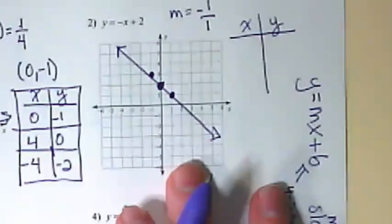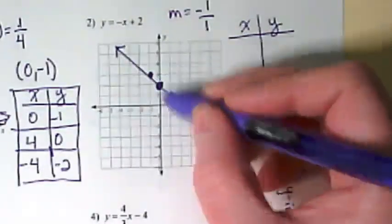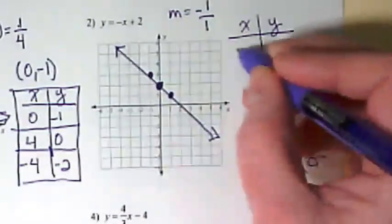And let's put those three points we found in a table. If I start with the one on the top left, I go negative 1, 3.